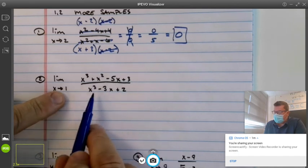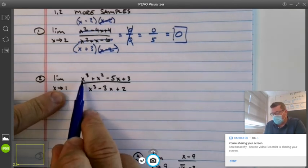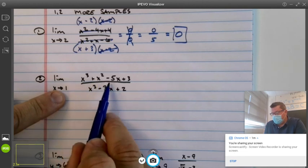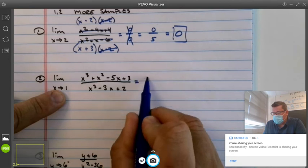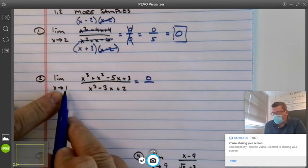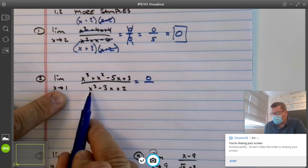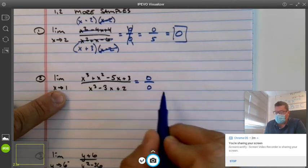Gosh, this looks nasty. Plug in 1 and see what happens. 1 plus 1 minus 5, but plus 3 more. We're talking about 0 on the top. 1, throw it in here. 1, 3, minus 3, and 0 on the bottom.